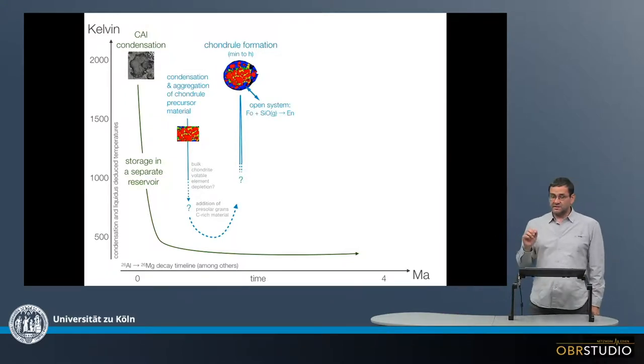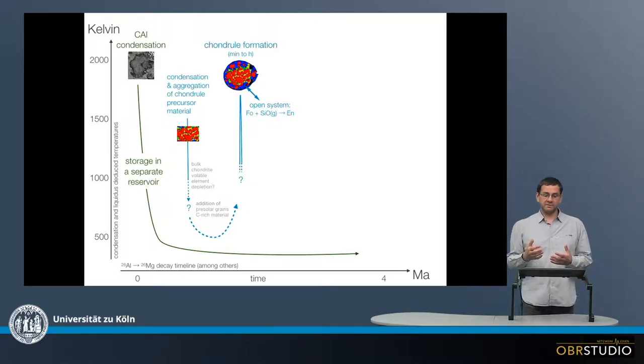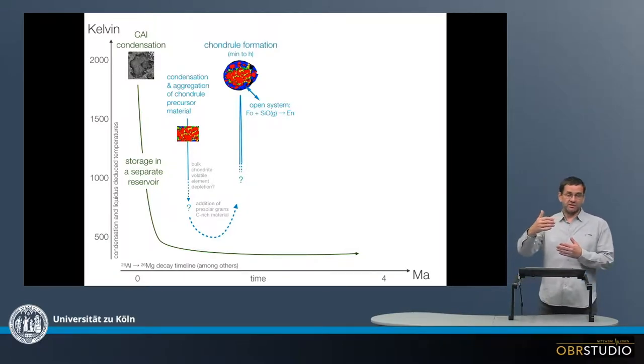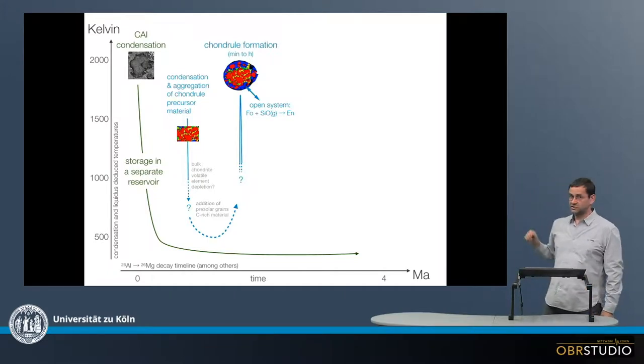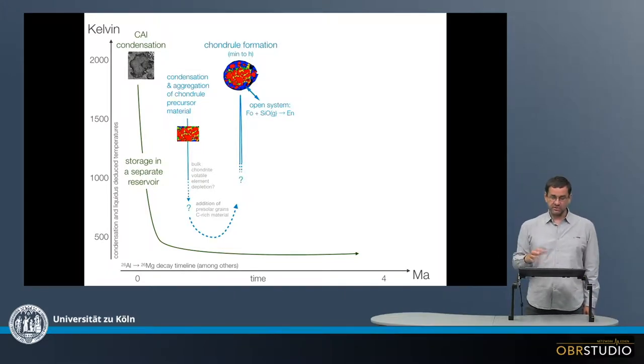And chondrules also likely acted as open systems, because chondrules in the center have this red false color, red olivine, and is surrounded by this blue shell of low calcium pyroxene. And this most likely formed by the exchange of SiO-rich gas from fractional condensation. So the olivine formed, the gas becomes increasingly more SiO-rich, and this SiO then reacts with the olivine to form this shell here of low calcium pyroxene.